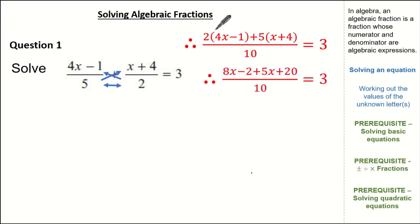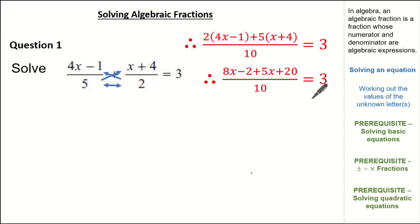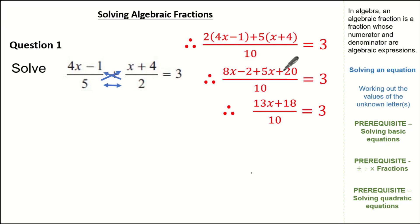2 times 4x gives us 8x; 2 times minus 1 gives us minus 2; 5 times x gives us 5x; and 5 times 4 gives us 20. We still have our denominator of 10 and it still equals 3. Simplifying: 8x plus 5x is 13x, and minus 2 plus 20 gives us plus 18. We still have our denominator of 10 and it still equals 3.